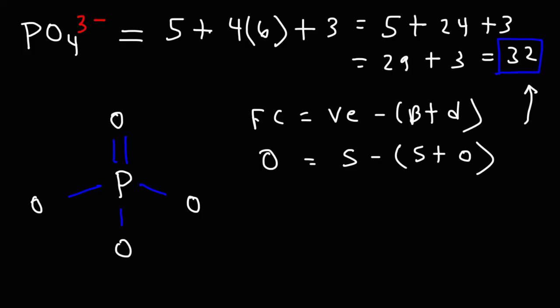Going back to this polyatomic ion, whenever oxygen has one bond, it's going to have 3 lone pairs and a negative charge. Whenever oxygen has 2 bonds, it's going to have 2 lone pairs and it's going to be neutral. So notice that the overall charge is negative 3 due to the 3 negative charges on the oxygen atoms.